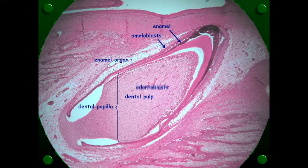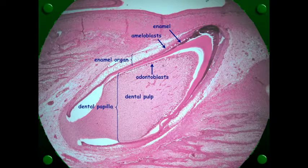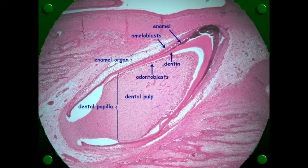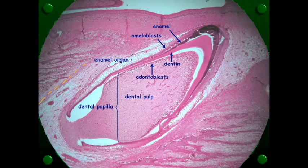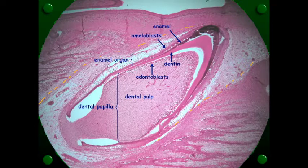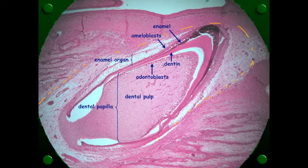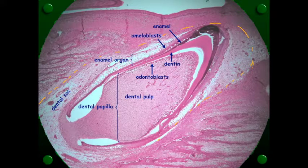And we see the odontoblasts within that producing the dentin. So now out here surrounding the tooth is our dental sac.